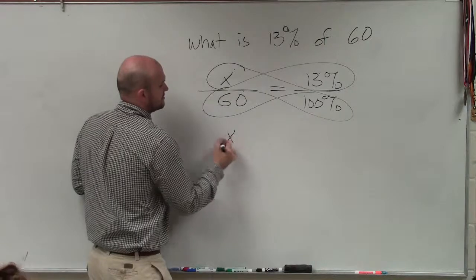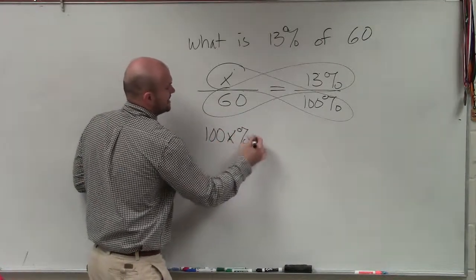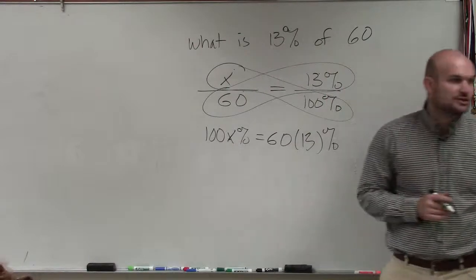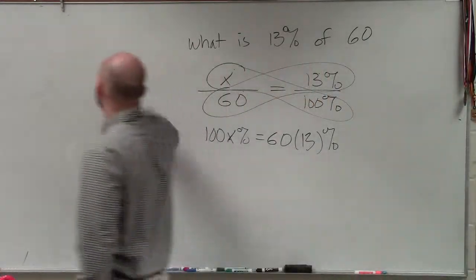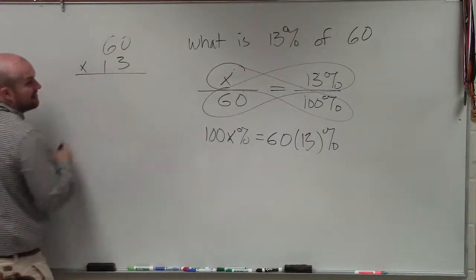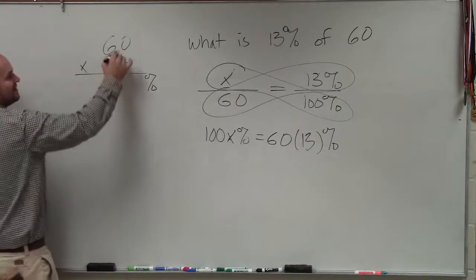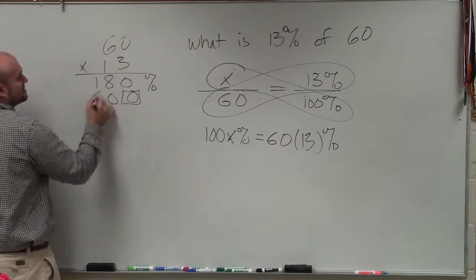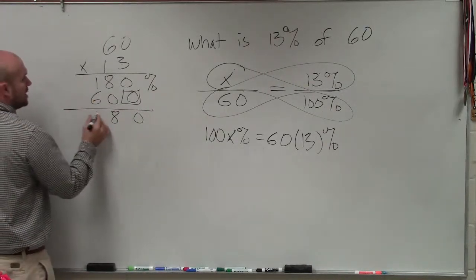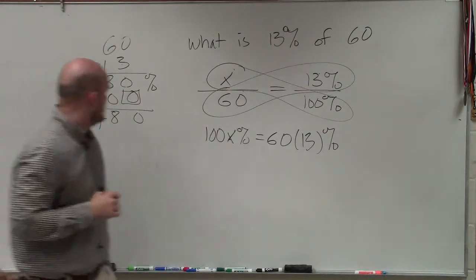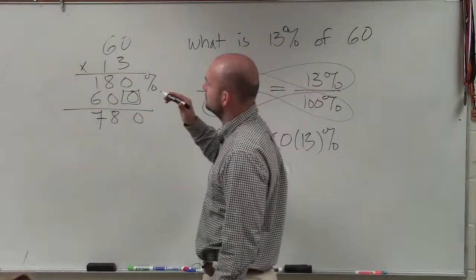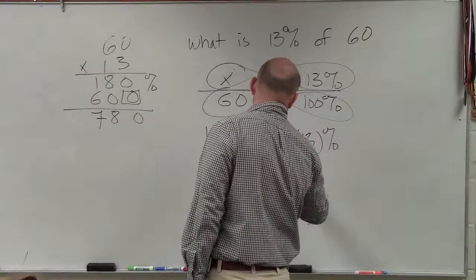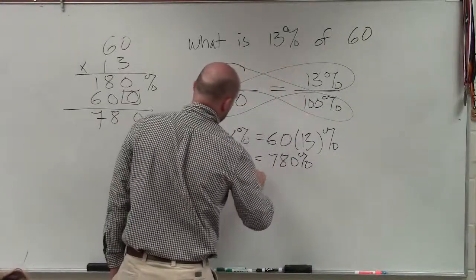So I have 100 times x equals 60 times 13%. We could multiply 60 times 13. I'd do: 3 times 0 is 0, 3 times 6 is 18, add the 0 as my placeholder, 1 times 0 is 0, 1 times 6 is 6 — giving us 780. So I would have 780% equal to 100x.